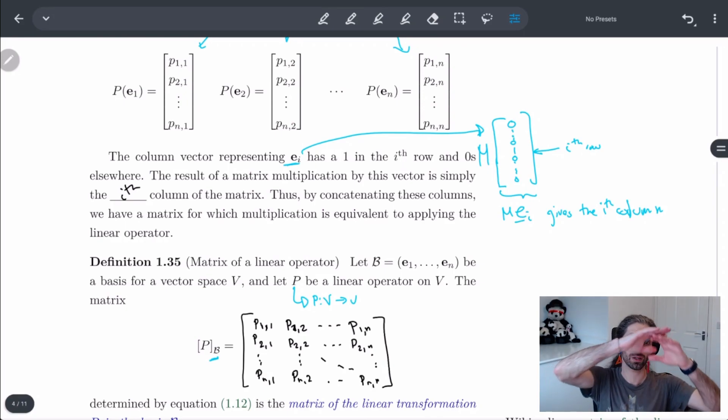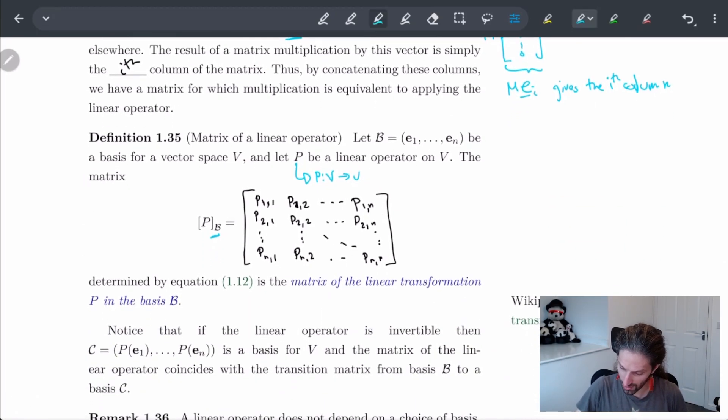This gives us the matrix of the linear operator. So we start off with some matrix and we multiply this and that's going to give us the matrix after the linear operator has acted. So this matrix in some sense encodes the information on the linear operator. We'll call this the matrix of the linear transformation P in the basis B, or the linear operator.